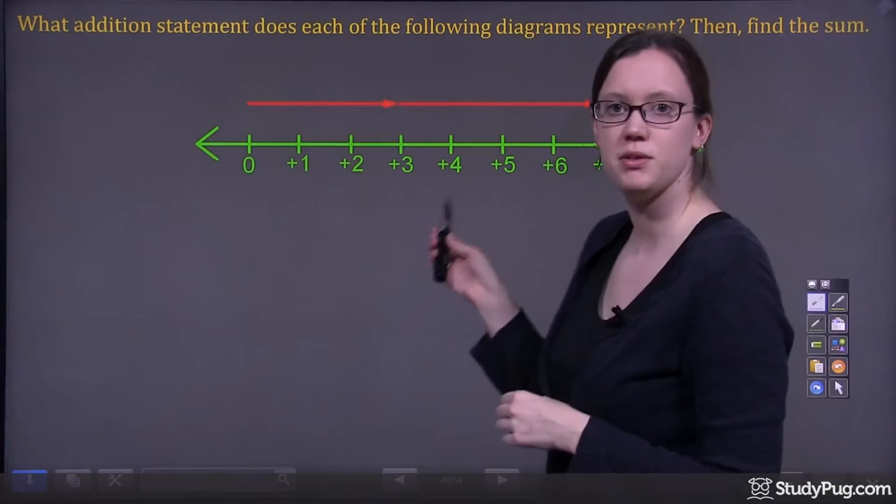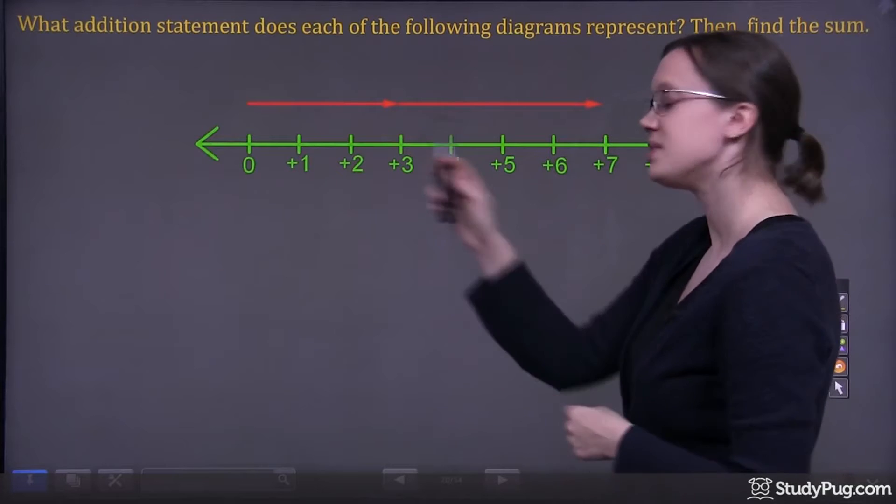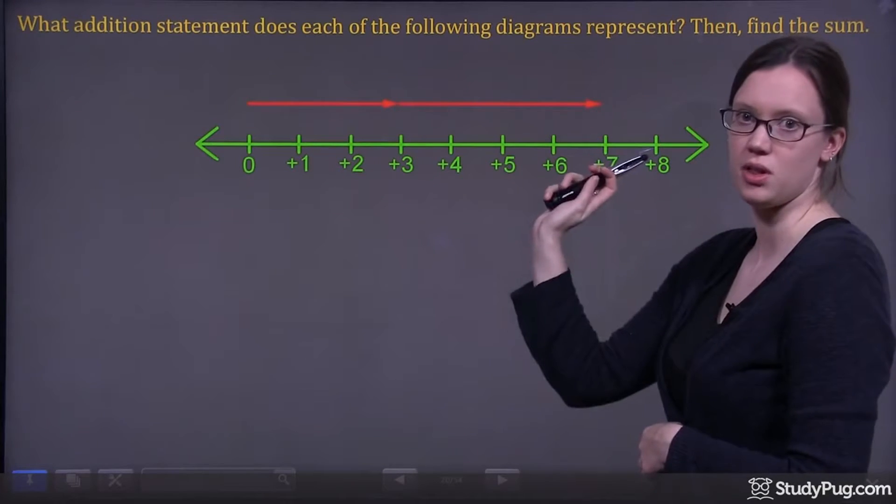We are going to write an addition statement for this diagram. Now we can see there's two arrows on this number line.